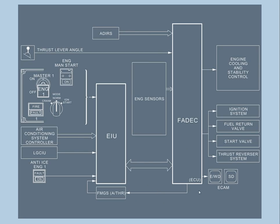Here is the FADEC — also called the ECU. It controls various systems: ignition system, start valve, thrust reverser system, fuel return valve, engine cooling, etc. Engine sensors provide information to the FADEC. The EIU sits between air conditioning, landing gear, CIU, NTIs, masters switching, and mode selectors such as engine manual start, sharing that information to the FADEC. For example, if there is more air conditioning demand, the FADEC will be told and will process a higher engine thrust setting.